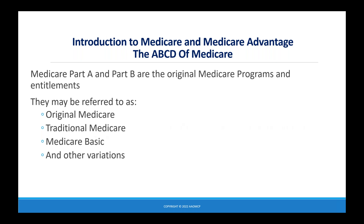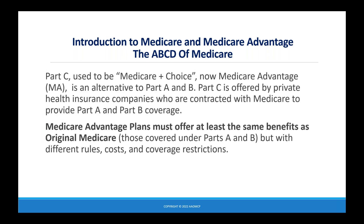Part C and Part D came later. Part C used to be called Medicare Plus Choice; it's now called Medicare Advantage, or MA. This is an alternative to Part A and Part B, offered by private health insurance companies contracted with Medicare to provide Part A and Part B coverage. Medicare Advantage plans must offer at least the same benefits as original Medicare, though they can do so under different rules, costs, and coverage restrictions.